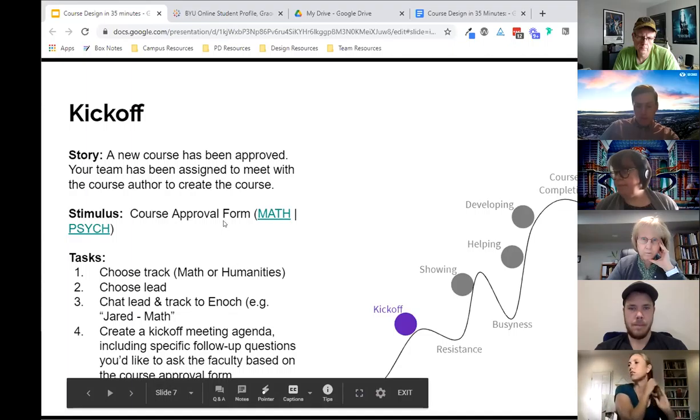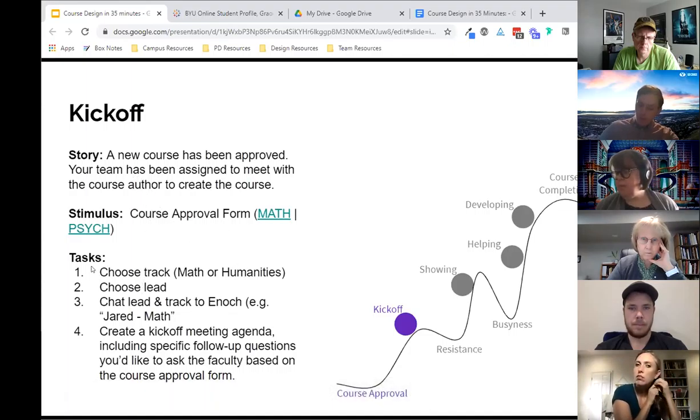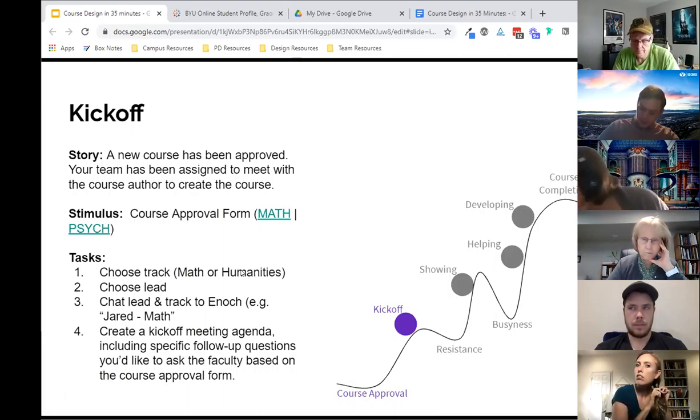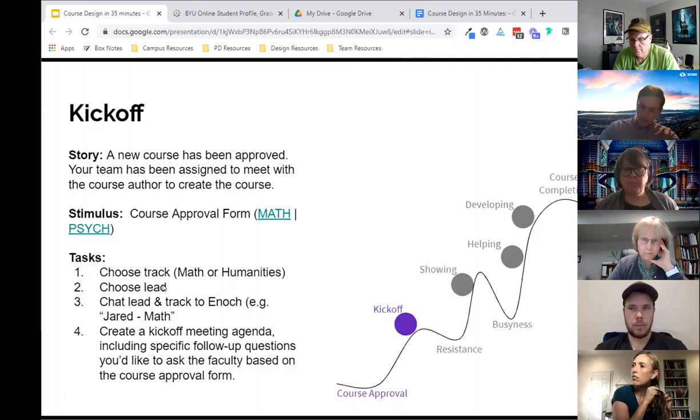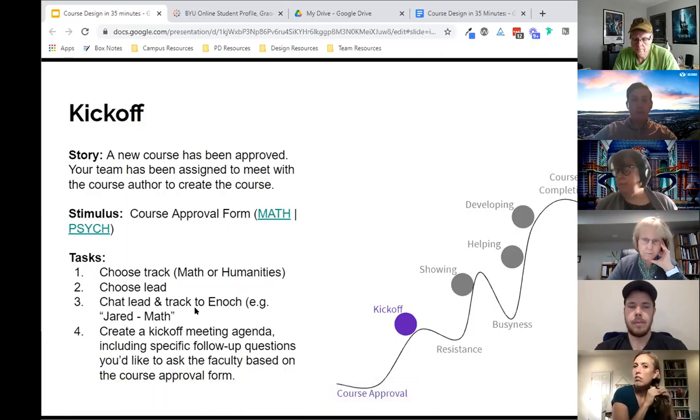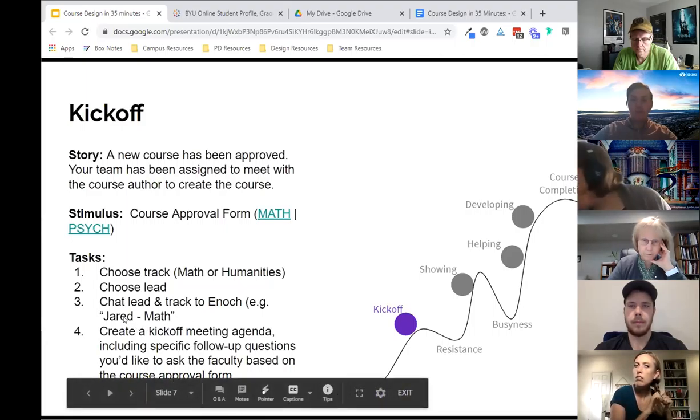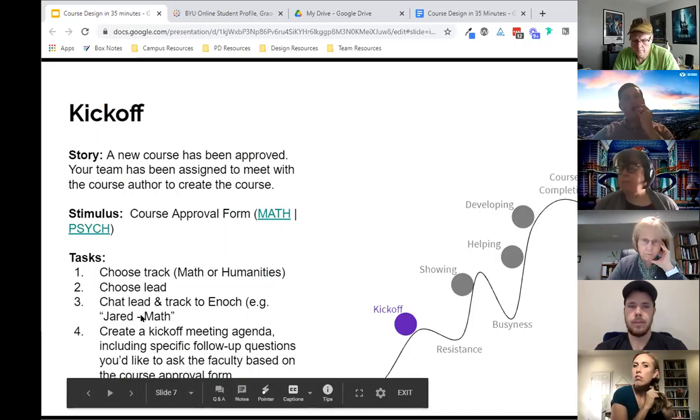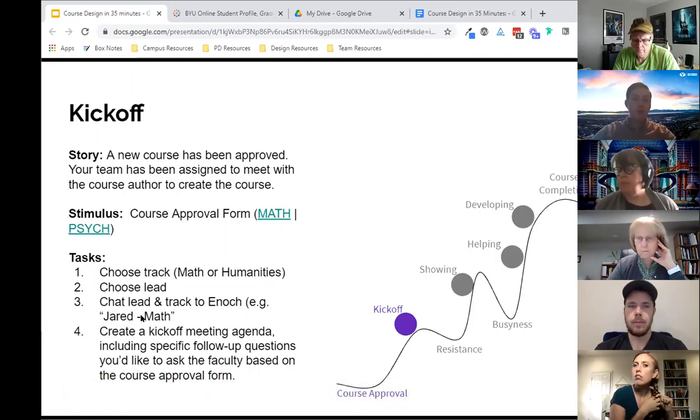So what you're going to do this time is kind of three things. Well, four things, I guess. So you're going to choose a track. You're going to choose either math or I should say psych here, not humanities. And then you're going to choose a lead for your team and that they will kind of be the lead for each of those, um, kickoff or breakout sessions. And then just in the chat, just drop me a message either to everyone or just to me, and just kind of say who the first name of the team lead and then which track you're taking.